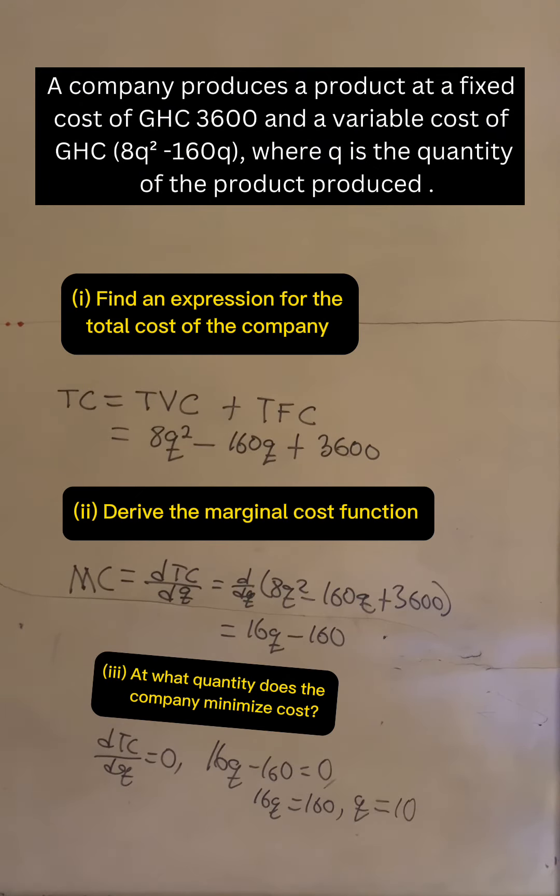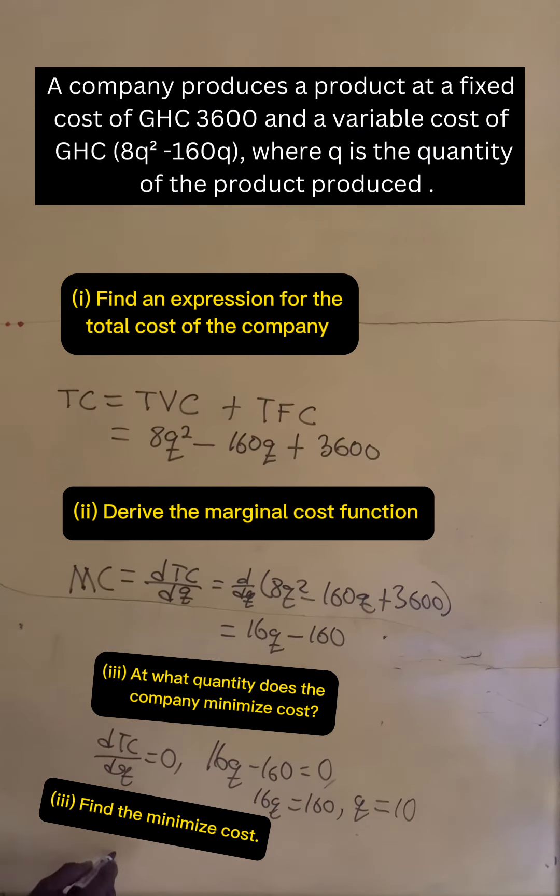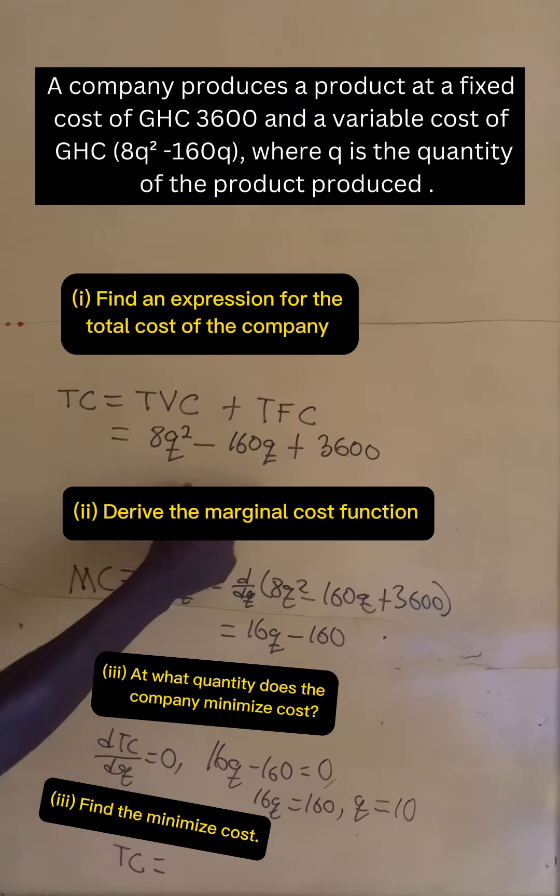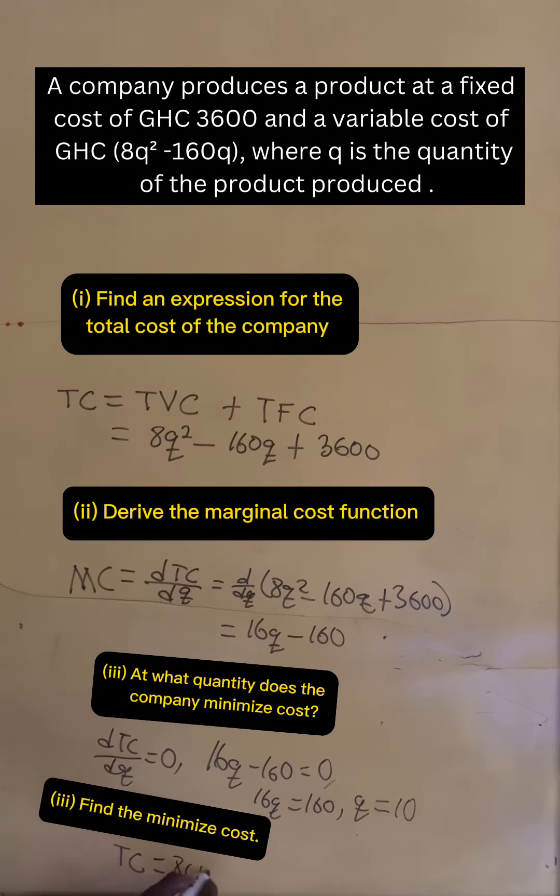That's very simple. Now we have to find the minimum cost. To do this, we put q = 10 into the total cost function. I hope you are enjoying the lesson. So we have 8(10²) - 160(10) + 3,600.